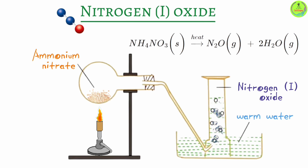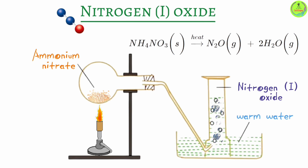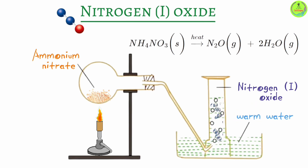In a previous video, nitrogen gas and its preparation was discussed. To prepare nitrogen gas in the lab you need ammonium nitrite, but to prepare nitrogen one oxide you need ammonium nitrate. Once the gas has been formed, it can be collected through the over-water method because the gas is only slightly soluble in warm water.